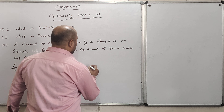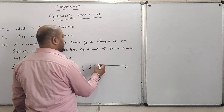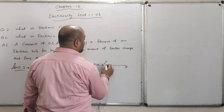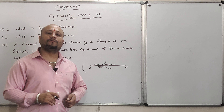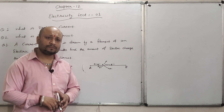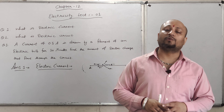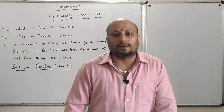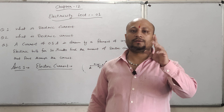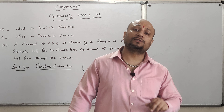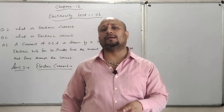For example, suppose this is wire AB. You know that this wire is constituted of charge particles — electrons are moving randomly. If there is no particular direction of the charge carriers, they are moving randomly in a zig-zag manner. It means there is no particular direction of the charge particles, and so there is no electric current.